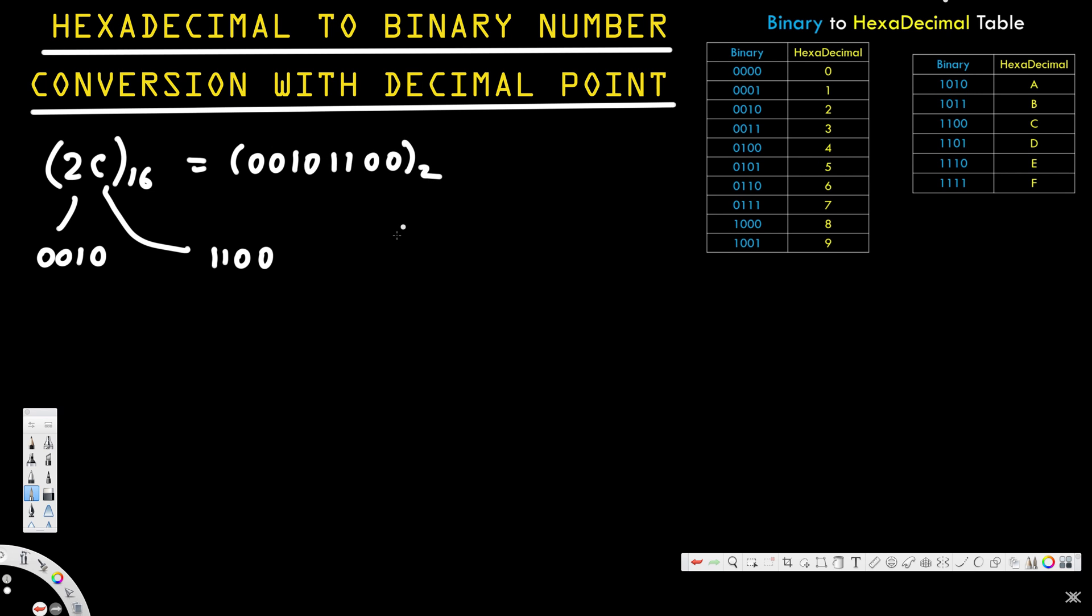Now let's look at another example. Let's say we have 0.A5 in hexadecimal (base 16). To convert this to binary, 0 is just 0. A is 1010, so we replace that with 1010. And 5 is 0101. So the conversion is 0.1010 0101, and the base is 2.